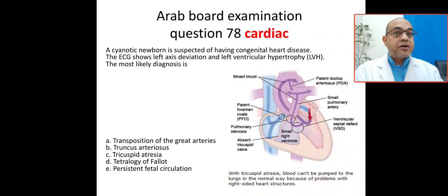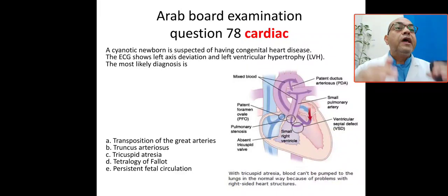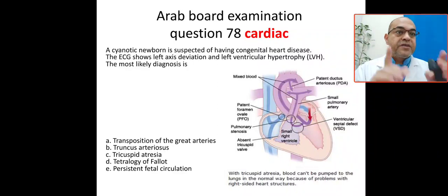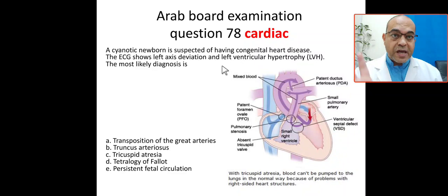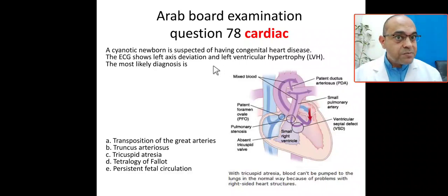This question is common in Arab board, Saudi board, Jordanian board, and Egyptian board, and it will really help you during your practice. This is a cardiac case: a cyanosed or cyanotic newborn is suspected to have congenital heart disease, and an ECG is done for this baby. What is the finding?